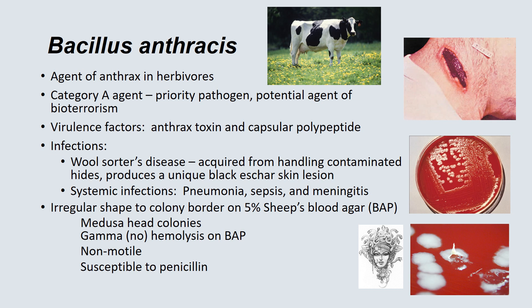Bacillus anthracis is the most important of the Bacillus species. It is the agent of anthrax, mostly found in herbivores, and is a Category A agent, meaning it is a very high-priority pathogen and could be a potential agent of bioterrorism. The virulence factors are anthrax toxin and capsular polypeptide. The most common infection is woolsorters' disease, caused from someone handling infected hides imported from other countries. It produces a unique black eschar skin lesion. Systemic infections can cause pneumonia, sepsis, and meningitis.